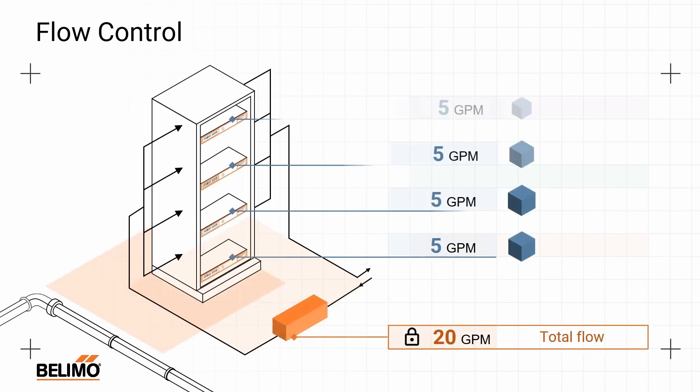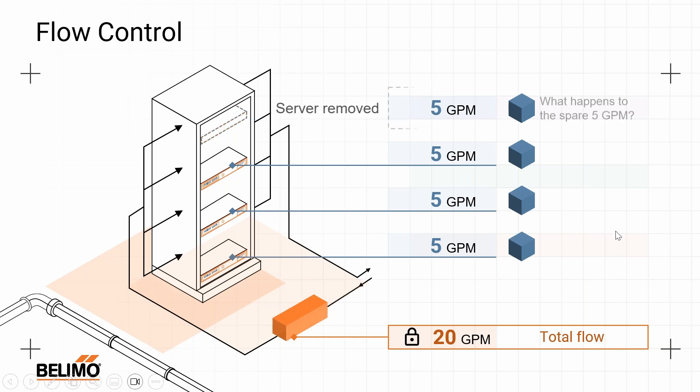Let's build a liquid-cooled rack. For simplicity, we'll say we have four servers, each requiring 5 gallons per minute for a total flow of 20 GPM. I have a single control valve at the bottom of the loop controlling flow to those four servers, and I'm fixing my flow at 20 GPM. So the question arises: if I have 20 GPM fixed, what happens if I need to remove one of the servers for service or replacement?